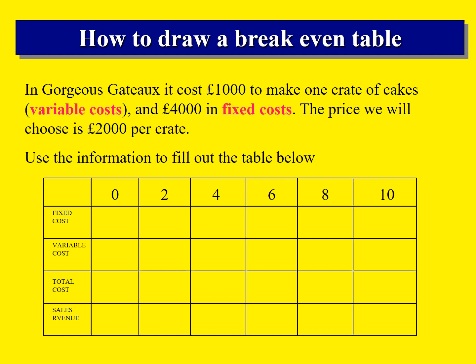How to draw a break-even table. For this video, we're using the game Gorgeous Gattas that we have played in class. Remember, it cost £1,000 to make one crate of cakes in our variable costs — so that was for the butter, the sugar, etc. £4,000 in fixed costs, that would be the rent and the bills, and the price we're going to be charging our customers is £2,000 per crate. We're going to use that information to fill out the table below.